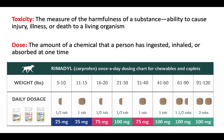Toxicity is the measure of the harmfulness of a substance—its ability to cause injury or death to a living organism. The more toxic it is, the more harmful it is. Dosage is the amount of a chemical that a person has ingested or inhaled. If something is more toxic, it will take a smaller dose to kill you—toxicity and lethal dose are inversely related.